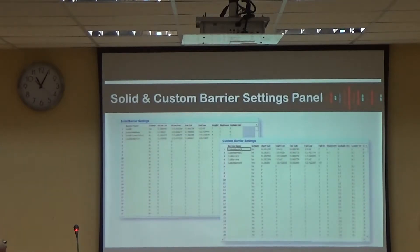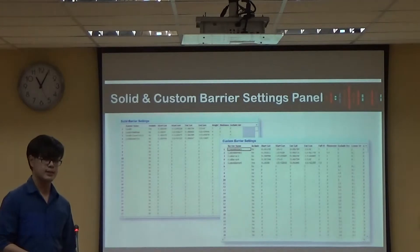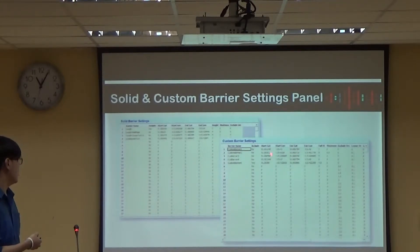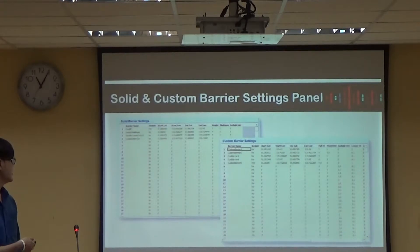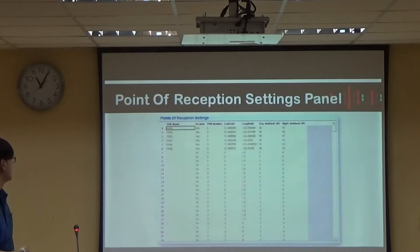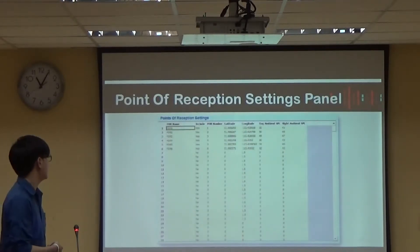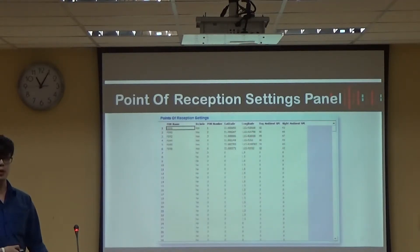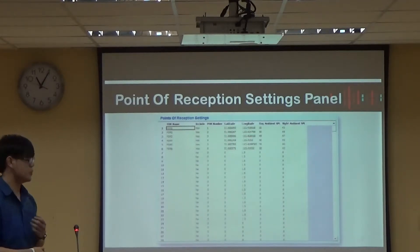Next is the custom barrier setting panel. As mentioned, buildings or mountains can act as obstacles on the map. You have to edit the whole input data in two blocks. This is the receiver point setting panel, where you specify the receiver point that you want to study.